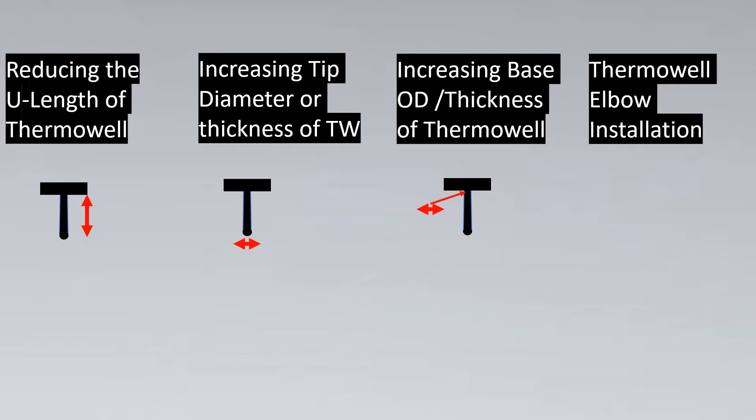If this is not feasible, then we can install the thermowell on an elbow. The elbow installation of thermowell is another option. As per ASME PTC 19.3, they don't say that then you don't have to do wake frequency calculations, but majority of the time because of such an installation, the velocity is greatly reduced.